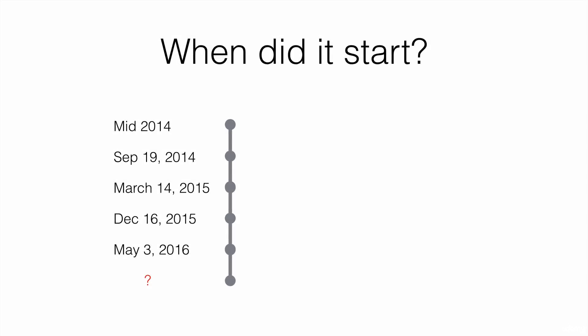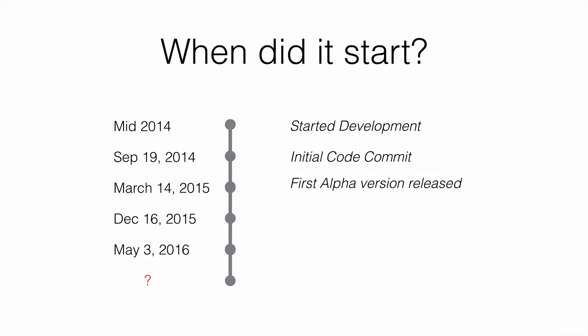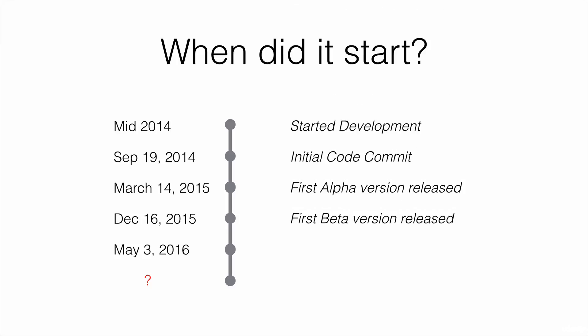When did it start? In mid-2014, the design and development of Angular 2 was started. On September 19 of that year, the first code commit was done under a GitHub account. On March 14, 2015, the first alpha version was released, and on that same year, the beta version was released as well.